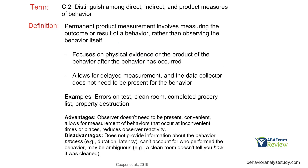And then finally, permanent product — which kind of exists in its own little bubble — involves measuring the outcome or result of a behavior rather than observing the behavior itself. We're not observing the behavior; we're looking at physical evidence or the product after the behavior has occurred. So behavior happens, time passes, and then we're going to measure that outcome. What is the product? What did that produce?